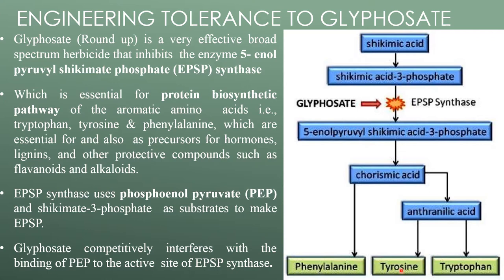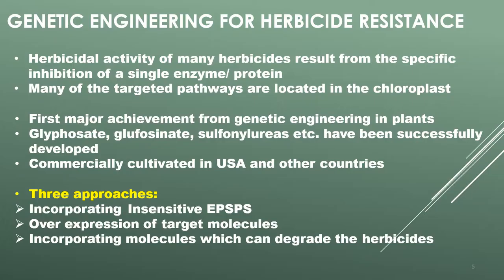Aromatic amino acids are also essential as precursors for hormones, lignins, and other protective compounds such as flavonoids and alkaloids. EPSPS synthase uses phosphoenolpyruvate (PEP) and shikimate-3-phosphate as substrates. Glyphosate competitively interferes with the binding of PEP to the active site of EPSPS synthase.